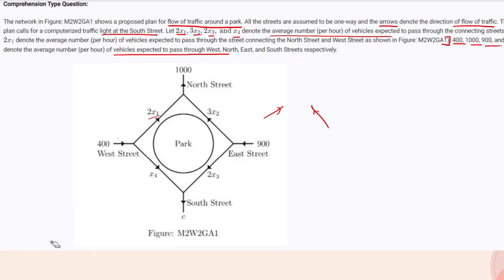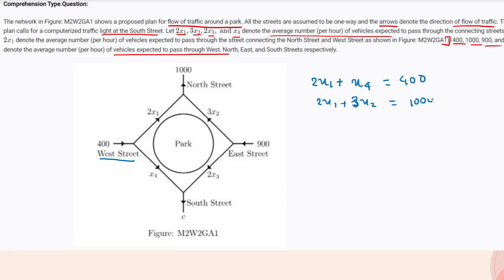We will first make equations based on the traffic flow. For the west street: 2x1 plus x4 equals 400. For the north street: 2x1 plus 3x2 equals 1000. For the east street: 3x2 plus 2x3 equals 900. And finally, 2x3 plus x4 equals c for the south street.